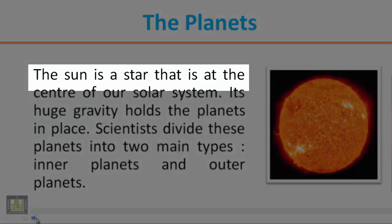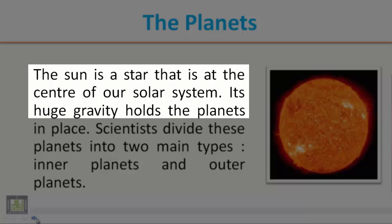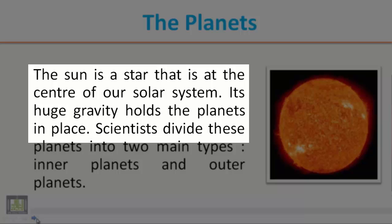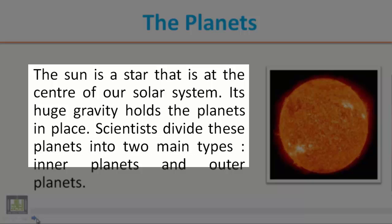The Sun is a star that is at the center of our solar system. Its huge gravity holds the planets in place. Scientists divide these planets into two main types: inner planets and outer planets.